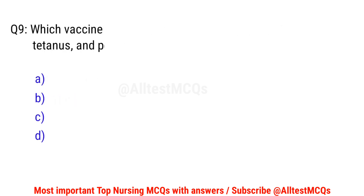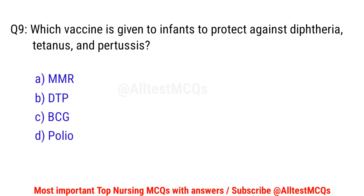Question number 9. Which vaccine is given to infants to protect against diphtheria, tetanus, and pertussis? The correct option is B: DTP.